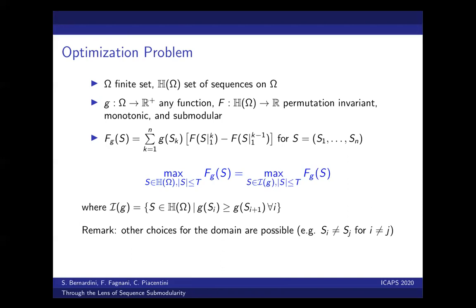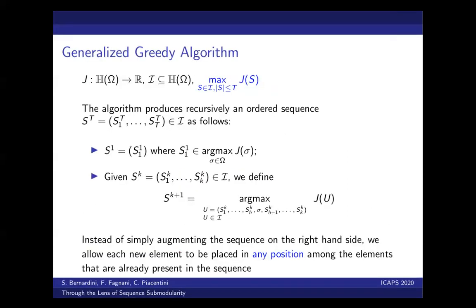So, the problem is that for this functional Fg, we have the property of forward submodularity, but Fg is not backward monotonic, which means that the standard greedy approach does not produce very good results. This is why we introduce a new greedy algorithm, which we call generalized greedy algorithm.